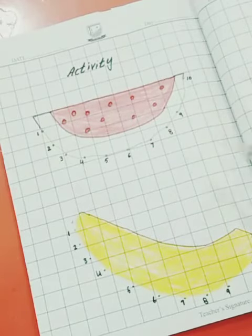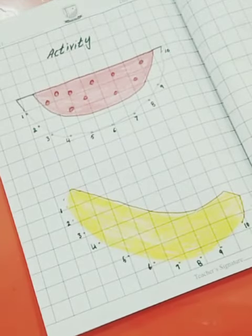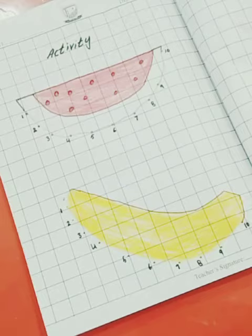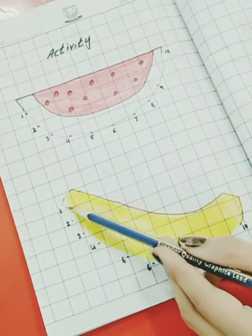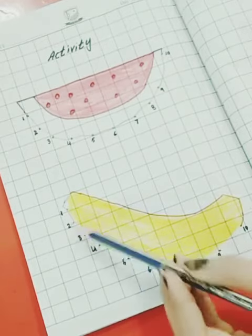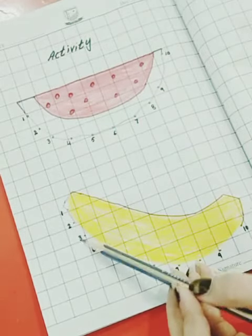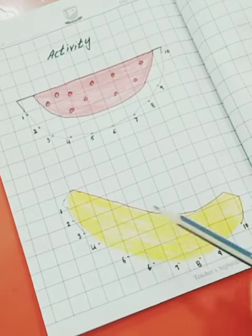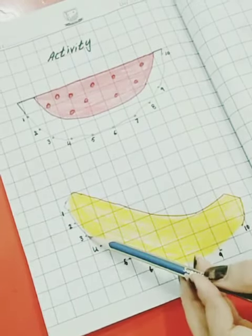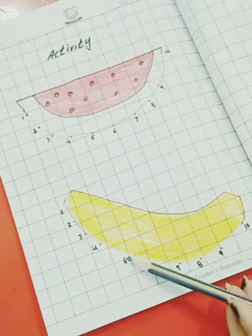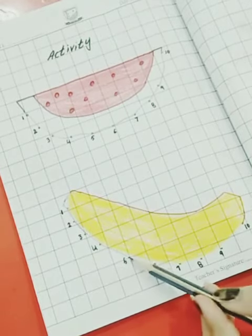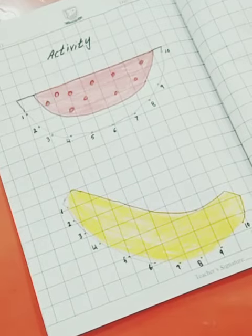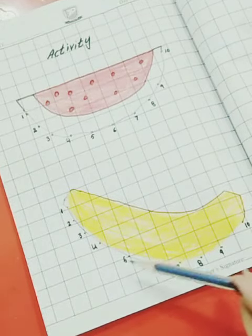Now next we have banana, but it's not complete. We have to complete it the same way by connecting the dots from one to ten.